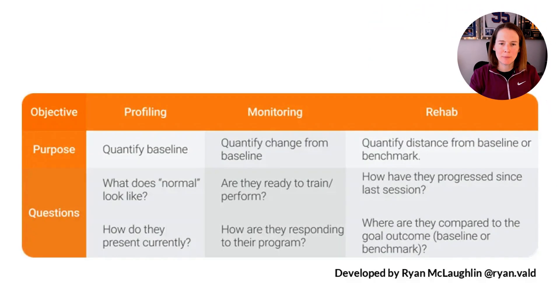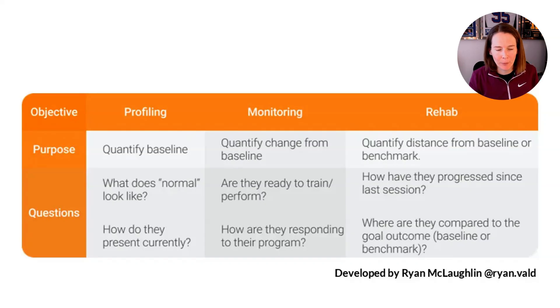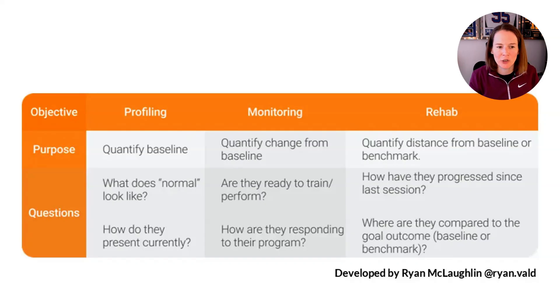Here we have a table developed by Ryan McLaughlin at VALD, illustrating the three different purposes and the corresponding questions that each of these buckets are trying to answer. Let's talk firstly about physical profiling, where we're trying to understand the outcome in terms of physical capacities as assessed through a counter-movement jump.